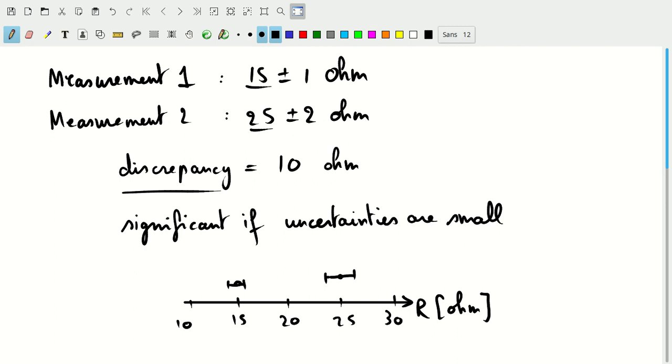You can see that both of those measurements are significantly in disagreement. The discrepancy between the two is significant. Now let's imagine we actually were looking at 10 and 20 ohm here. Then of course the uncertainty here would have been like this. The uncertainty on the point at 25 would have been probably something like this.